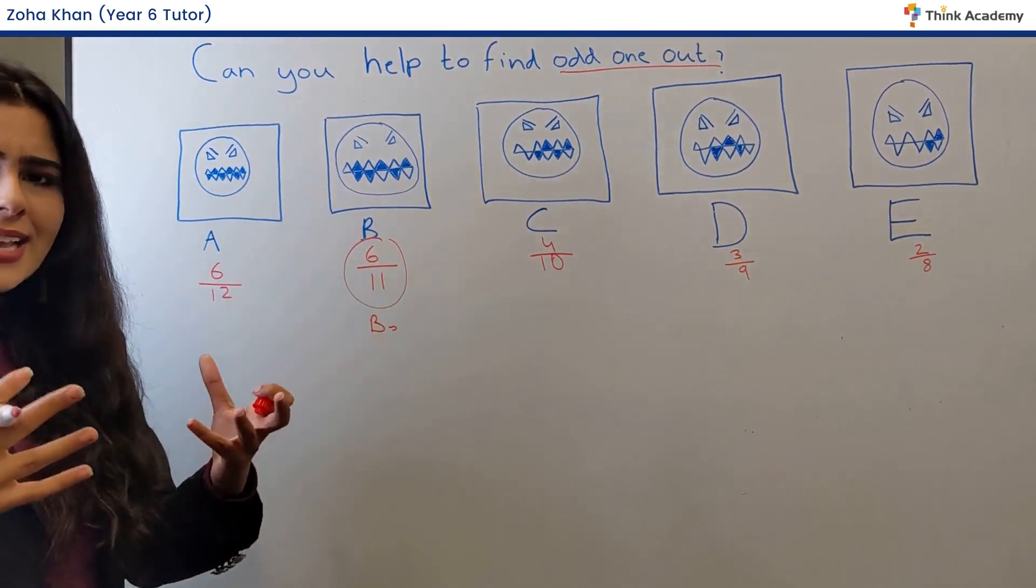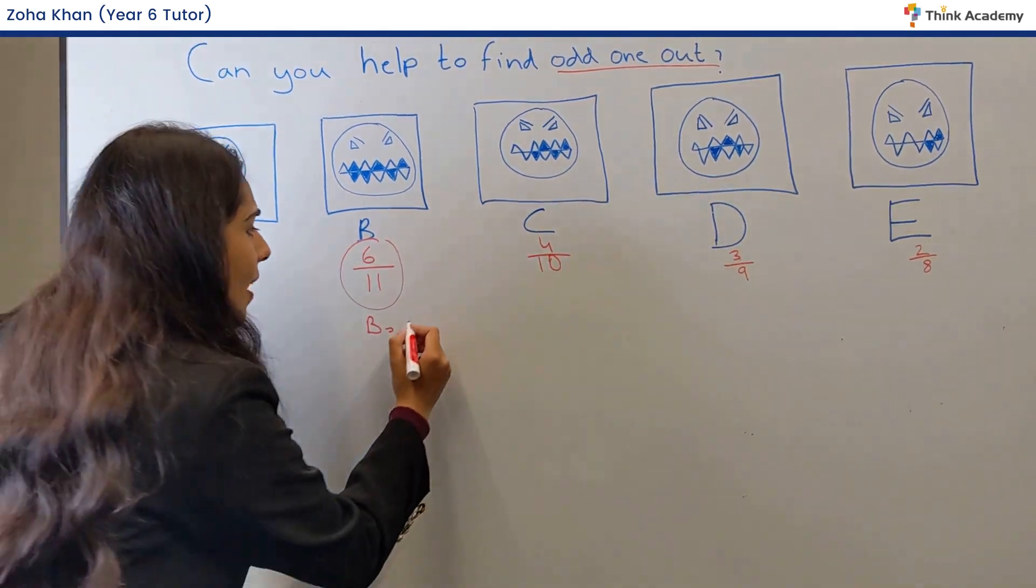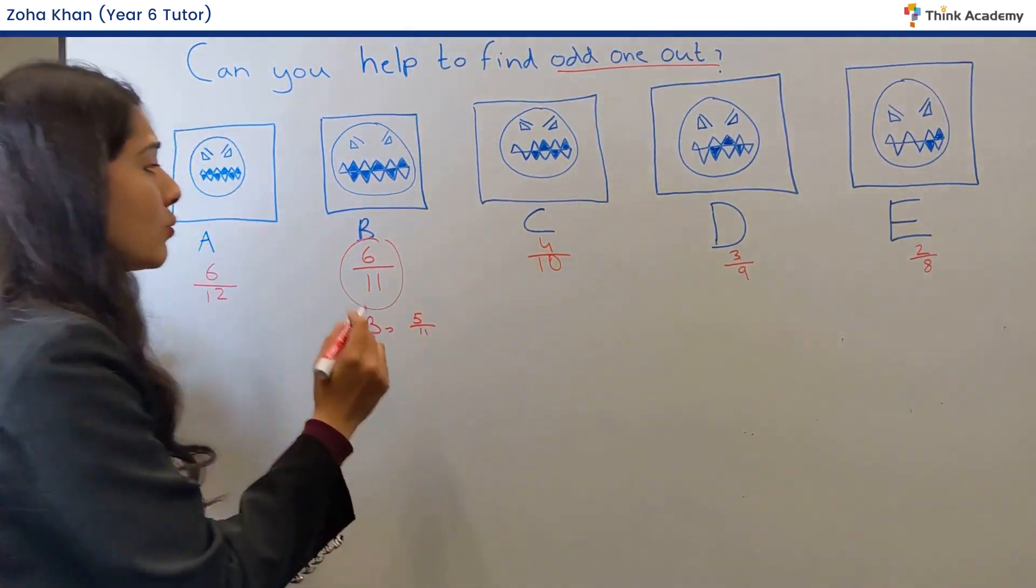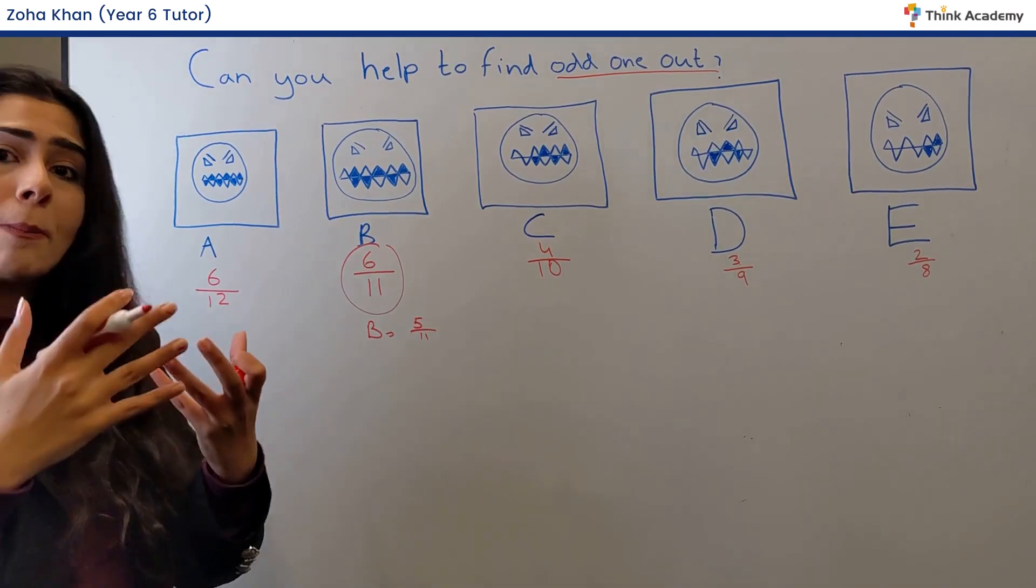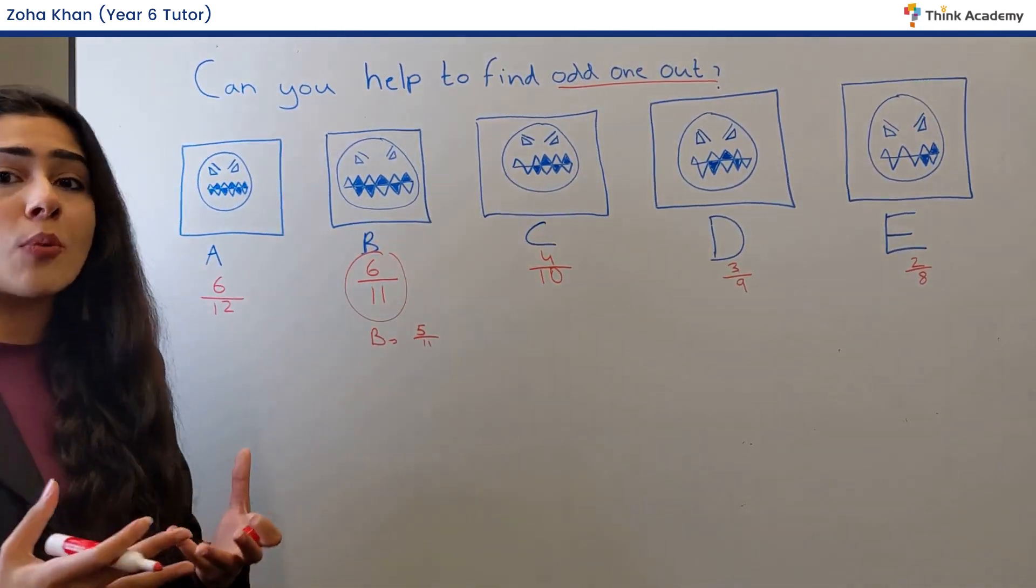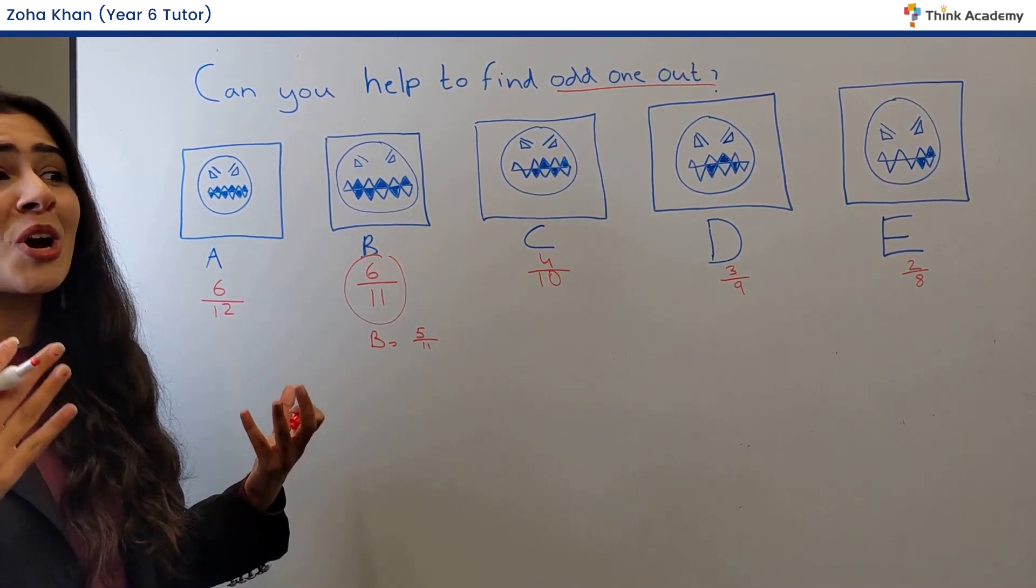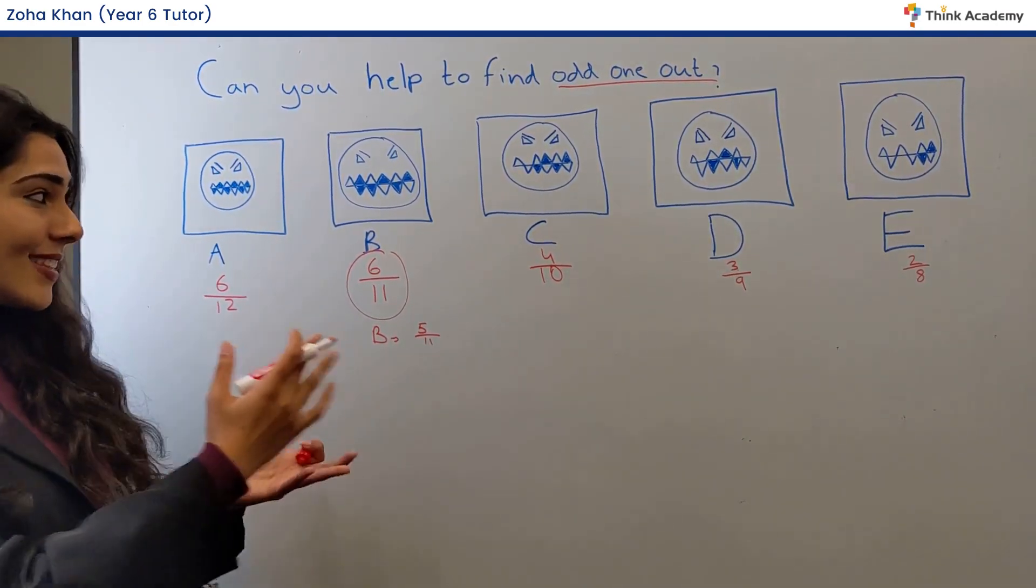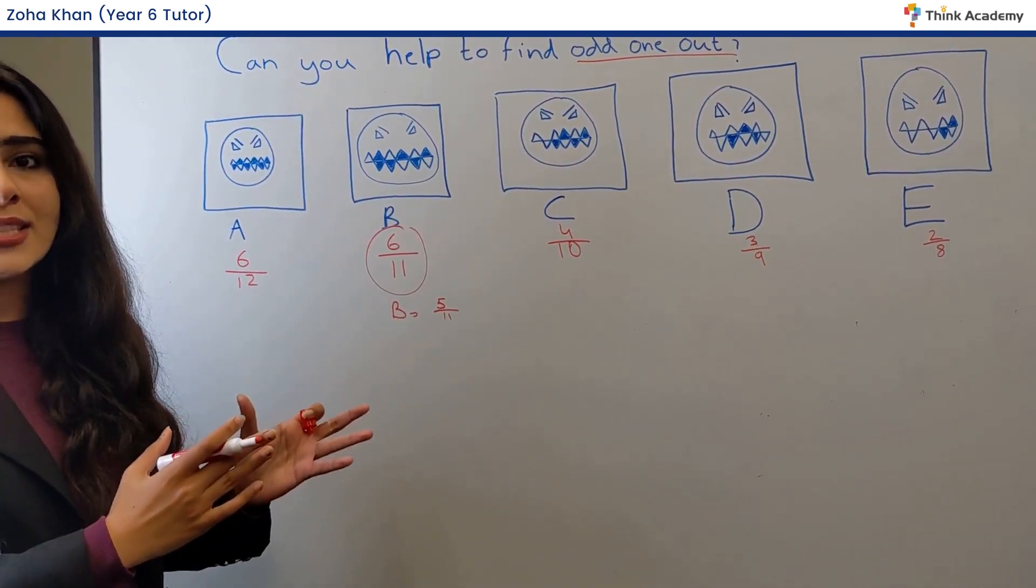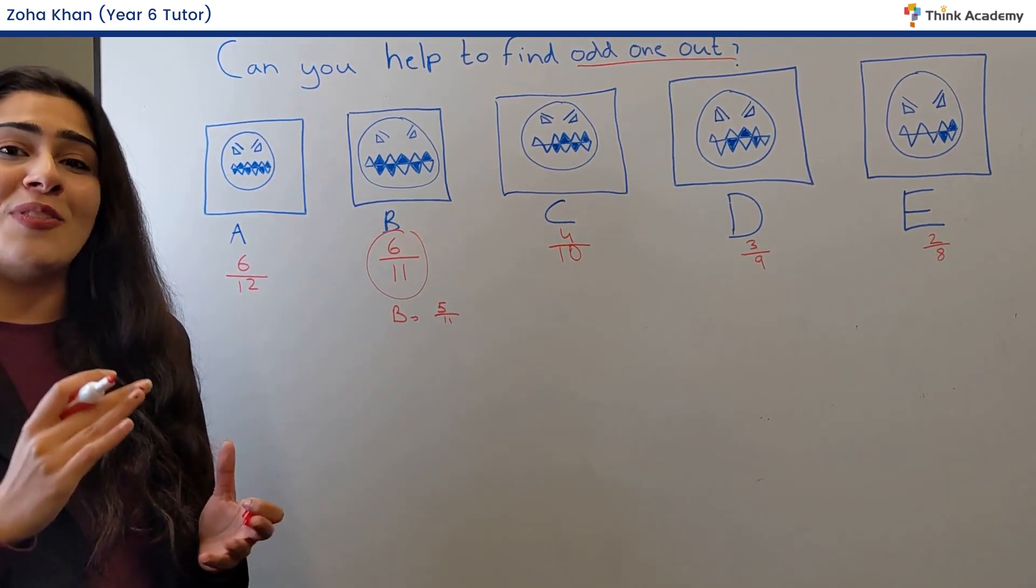And let's see, so for B to actually fit in this pattern, what would it have to be? Well, it would have to be five over 11, because we see that the numerator, which is the top part of the fraction, decreases by one each time, and the denominator, which is the bottom part of the fraction, decreases by one each time too. So that is the pattern, and whenever you have a question like this, with shaded parts always try to work out the fraction of the shaded over the unshaded.